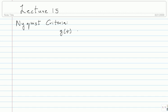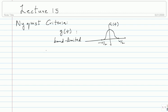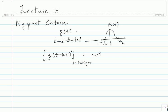G of T is band-limited to minus W by 2 to W by 2. Suppose you have G of F being band-limited like this. G of T is band-limited, and you want G of T minus KT for K an integer to be orthonormal.